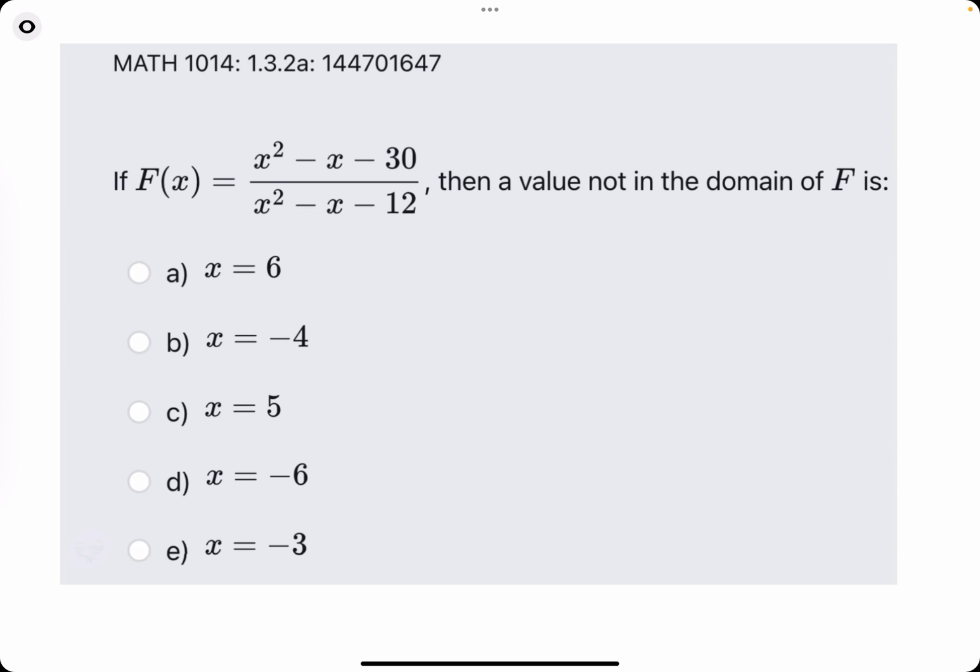So first, let's kind of lay out the problem. They say if f of x equals this, then a value not in the domain of f is something, so one of these x values. So what we're looking for, really just to kind of summarize, we're looking for the x value that makes the denominator here equal to zero because if the denominator is equal to zero, then the entire function would be undefined. Therefore, that x value would not be in the domain since it's not producing a defined function value.